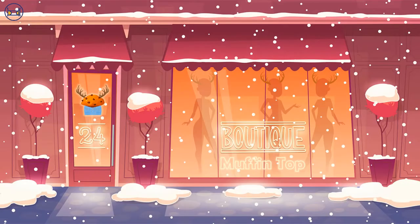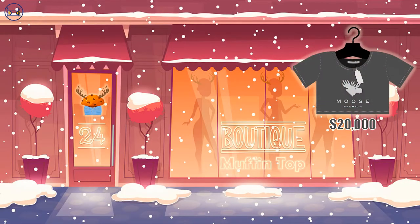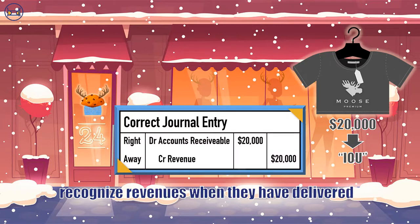For example, Muffintop could deliver $20,000 worth of crop tops to Mooses with Cabooses, who promise to pay back the $20,000 next quarter, and fail to record this revenue because they haven't received any cash yet. Recall that with accrual-based accounting, Muffintop should recognize revenues when they've delivered the crop tops to Mooses with Cabooses, regardless of when cash is received.